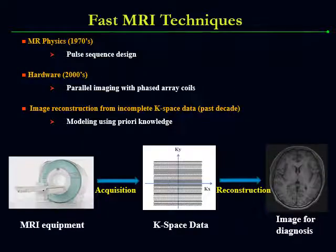To accelerate MRI imaging, different techniques have been developed, such as MRI physics-based pulse sequence design, hardware-based parallel imaging with fixed array coils, and image reconstruction from incomplete k-space data. These measures can either reduce the acquisition time or reconstruction time.